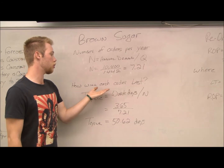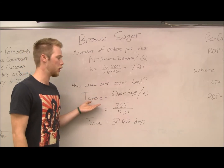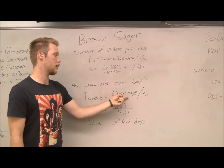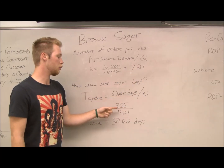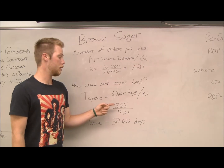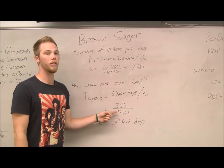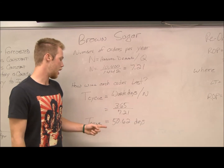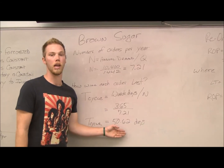How long will each order last? The T-cycle, which is your time between orders, is the number of workdays divided by N, which we just found. In this example, that is 365 days divided by 7.21, and that gives us a T-cycle time of 15.62 days.